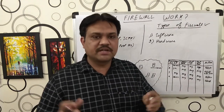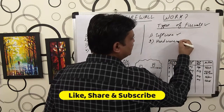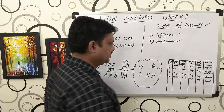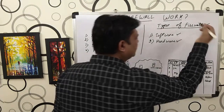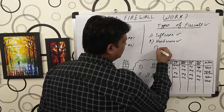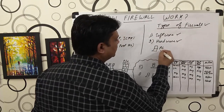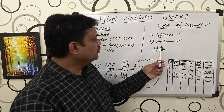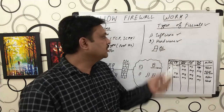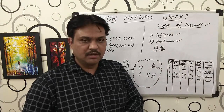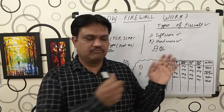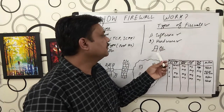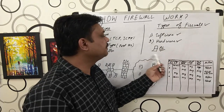Let us start with the types of firewalls. There are two types of firewalls available: one is software and one is hardware. Software firewall — say for example you have a single PC at your home which you are using. In your PC, by default, a software firewall is available whether it is Windows 7, 8, 10, or Server — whatever it is.